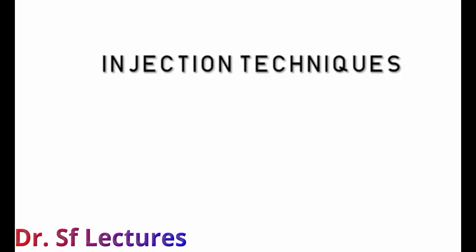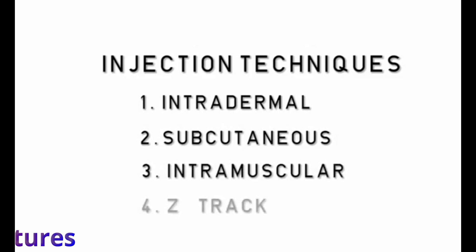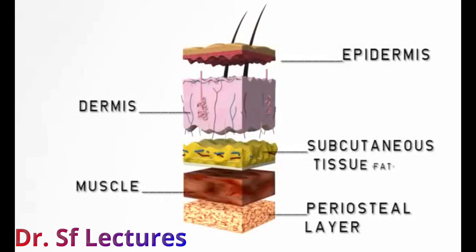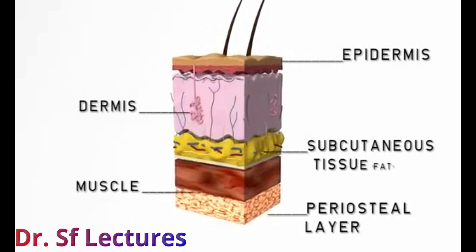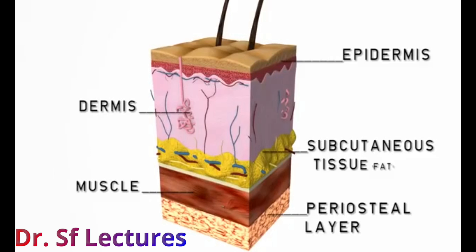Injection techniques. This tutorial will analyze the different injection techniques and how they are used. The injection techniques are divided into four routes: the intradermal, the subcutaneous, the intramuscular, and the Z-track route. The nurse must be familiar with the location of the injection site in relation to the skin, as this knowledge is needed to ensure you administer the medication in the right area.